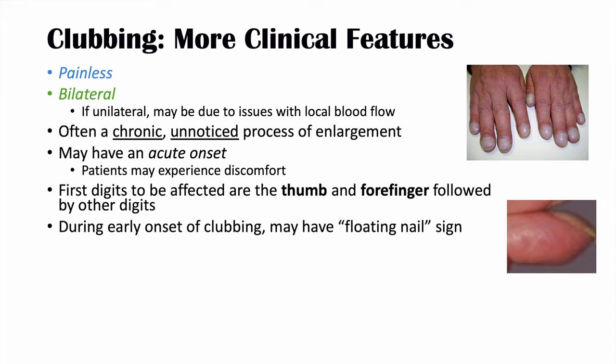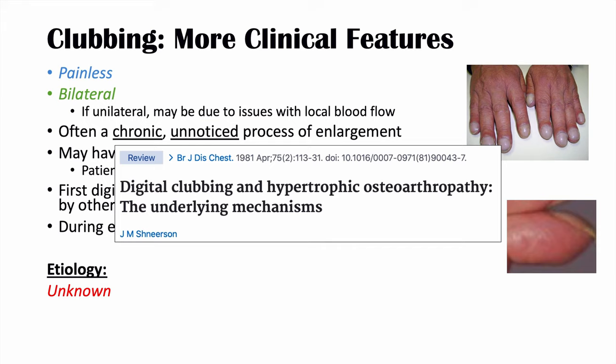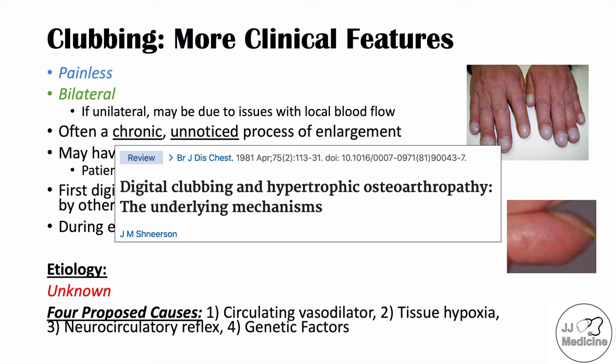Clubbing involves swelling or proliferation of connective tissue at the distal ends of digits, but the exact underlying mechanism is not entirely known. From a 1981 article entitled 'Digital Clubbing and Hypertrophic Osteoarthropathy: The Underlying Mechanisms,' four proposed causes are identified: a circulating vasodilator, tissue hypoxia, a neurocirculatory reflex, and certain genetic factors.